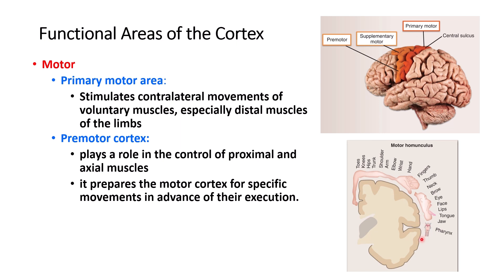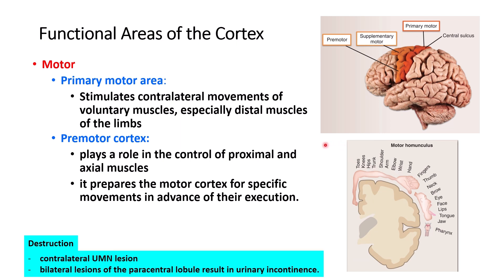If there is damage to the primary motor cortex and premotor cortex, you can get a contralateral upper motor neuron lesion — contralateral because this is part of the corticospinal tract, which crosses the midline either in the medulla or in the spinal cord — and this will cause motor problems.